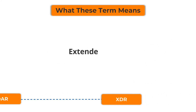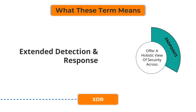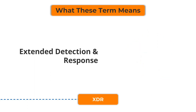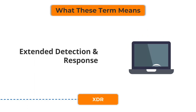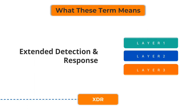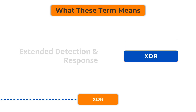XDR — Extended Detection and Response. XDR is the next-gen approach, offering a holistic view of security across endpoints, networks, and applications. It focuses on detecting and responding to advanced threats by combining data from multiple layers of defense into one seamless platform.